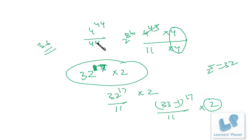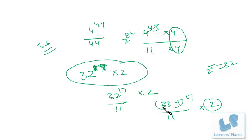To recap: 4^44 ÷ 44 — I take 4 as common, giving 4^43 × 4 and 11 × 4. Then 4^43 = 2^86 = 2^85 × 2 = 32^17 × 2. Writing 32 = 33 − 1, and dividing (33 − 1)^17 by 11 gives remainder (−1)^17 = −1. Multiplying by 2 gives −2; positive remainder is 11 − 2 = 9. Multiplying by the common factor 4: 9 × 4 = 36 is the final remainder.